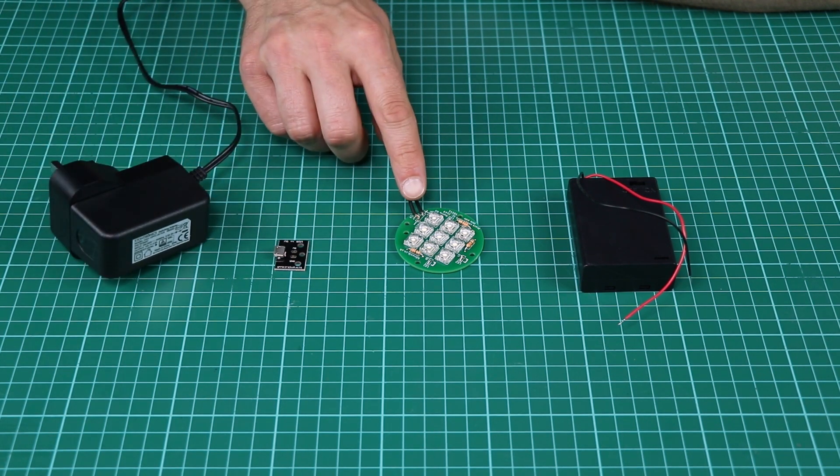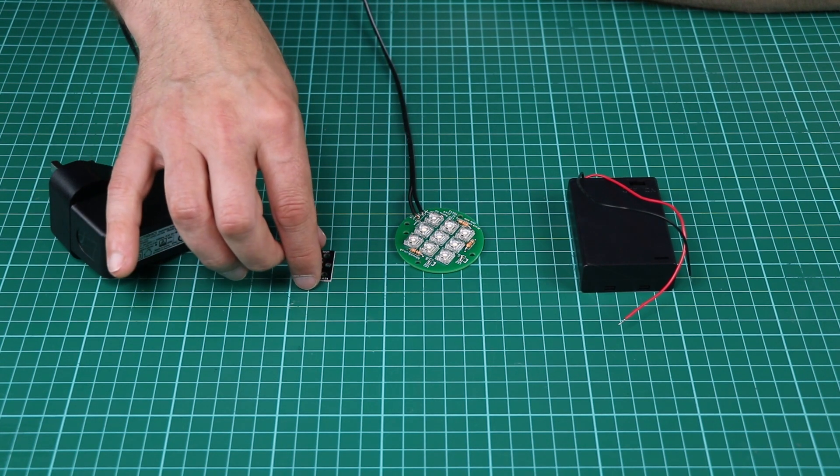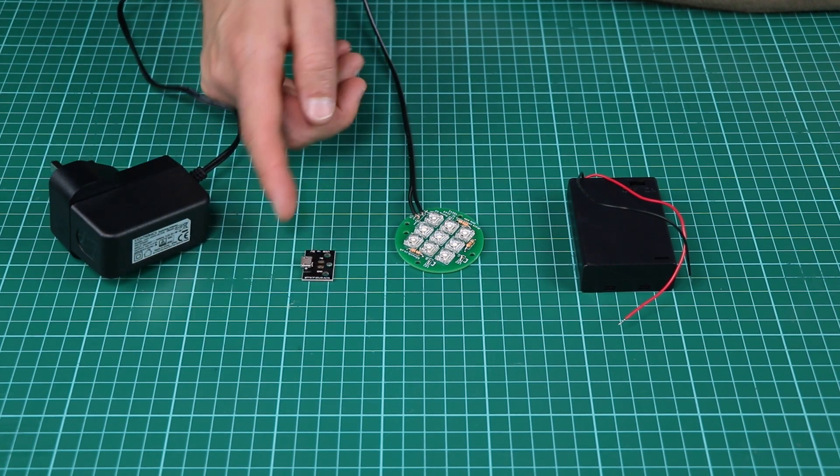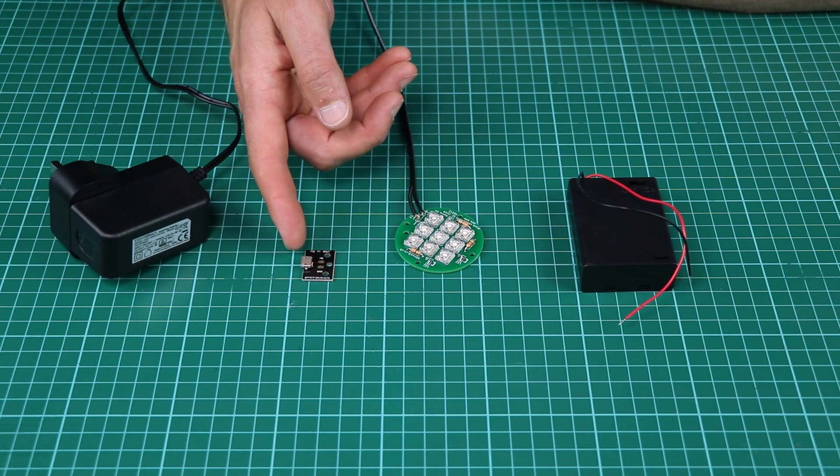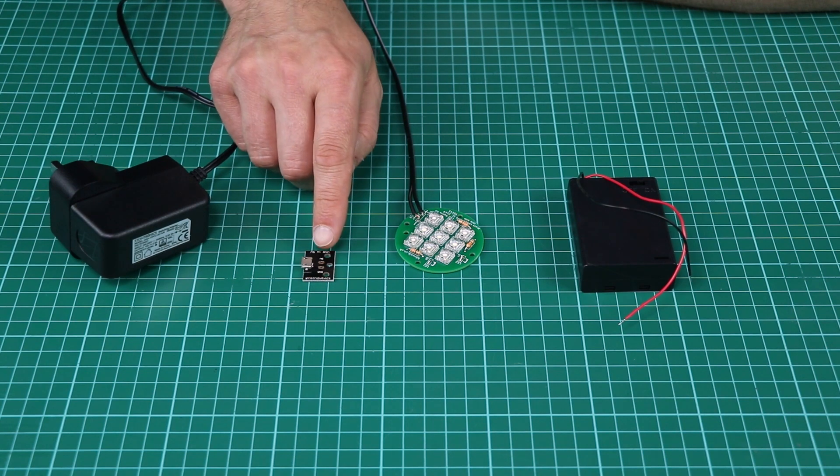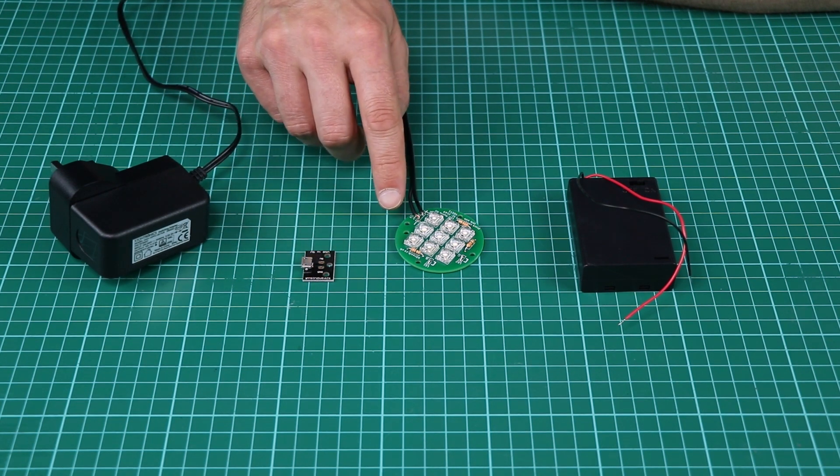Or we could use something like our 5-volt micro USB breakout board. This would accept a standard 5-volt micro USB power supply like those you get with mobile phones, and then you would jump over from here to here with wires connecting the positive and negative supplies.